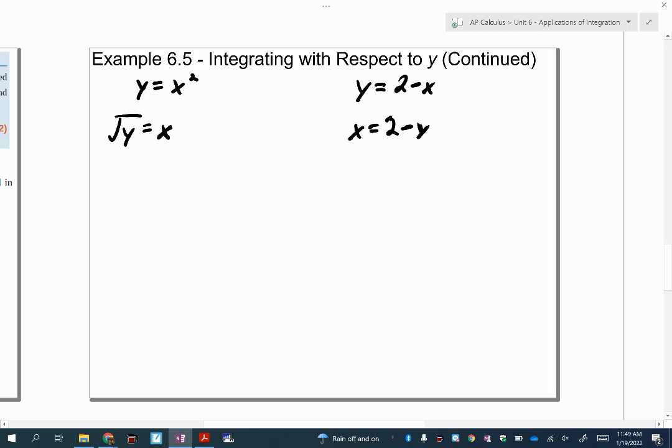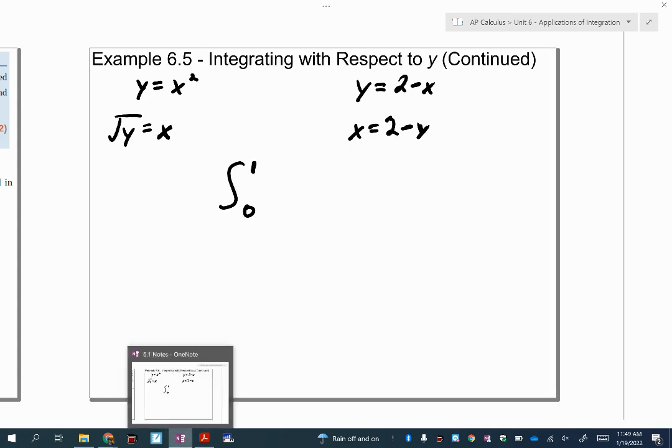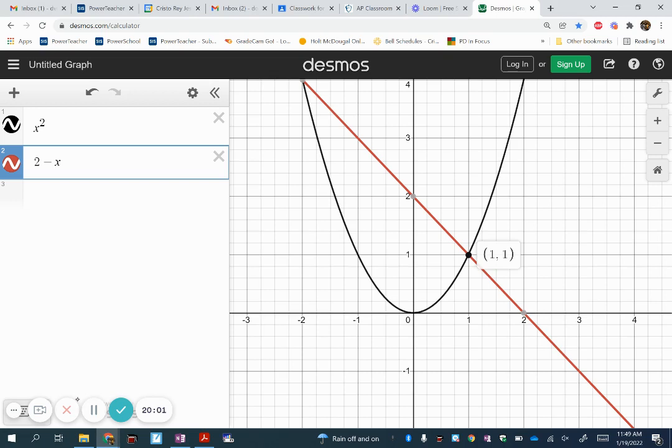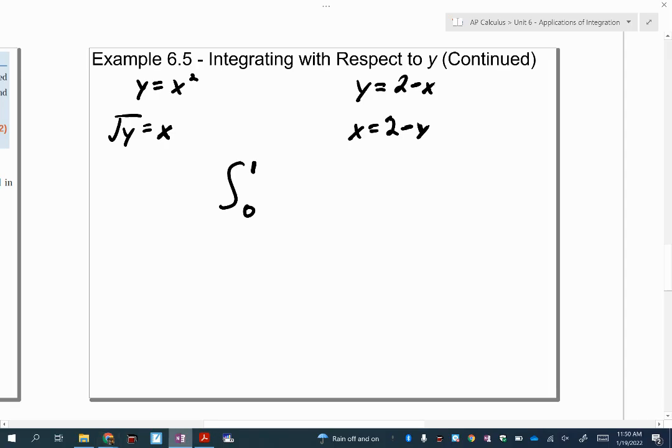All right. And so to do my integral with respect to y, I'm actually going to use 0 to 1 as opposed to what I used before, which was 0 to 2, because, you know, I'll try to explain it in the sketch. But if you were to look, kind of rotate it, right, where this is the x-axis and this is the y-axis, we're only going up to 1 here where they intersect. So that's why I'm using 0 to 1. And I'm going to use the red one, which is 2 minus y, is above the black one. So I'm going to do the integral from 0 to 1 of 2 minus y minus the square root of y.